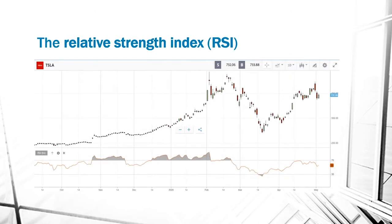Here we can see the daily chart of Tesla. Tesla is a stock that has increased substantially over the past year. From November 2019 to February 2020, the Tesla stock rose from around $250 to $900.